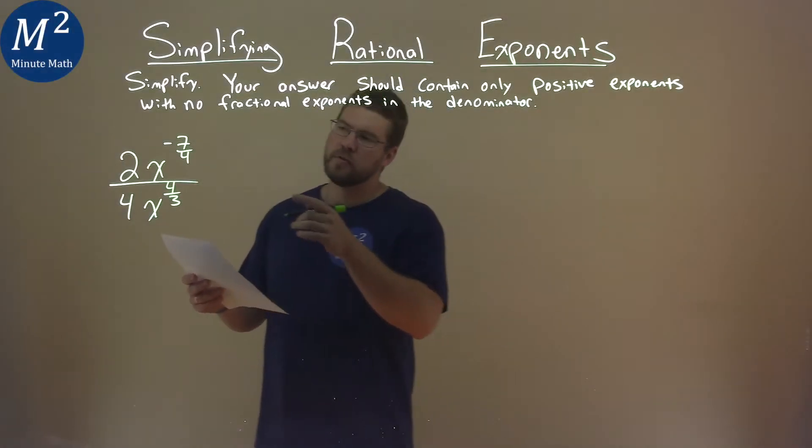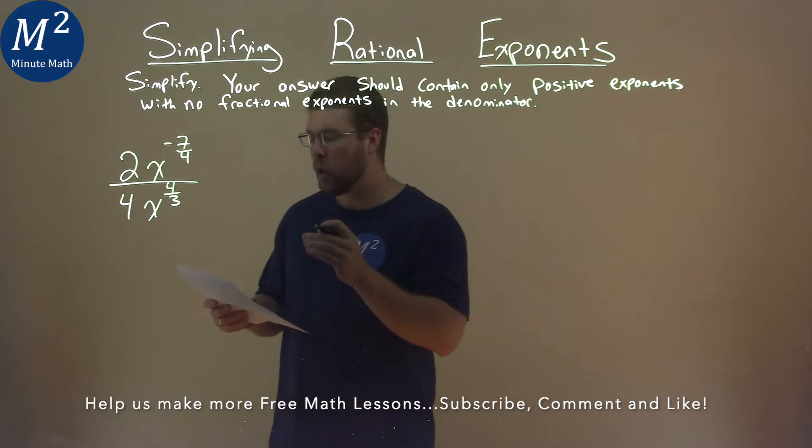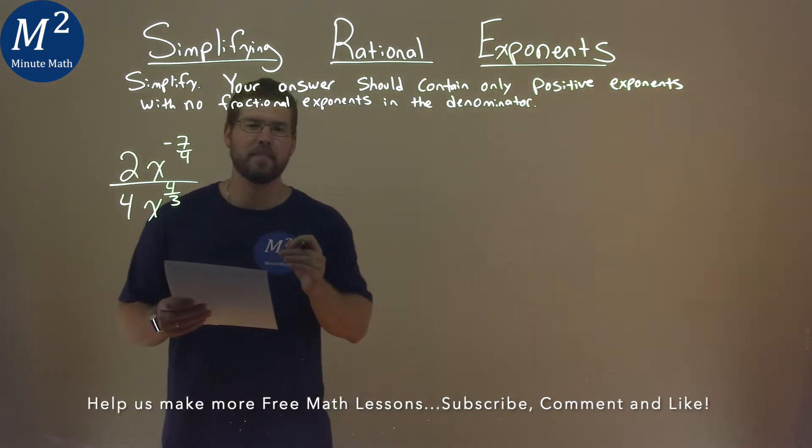We're given this problem right here: 2x to the negative 7 fourths power over 4x to the 4 thirds power, and we get to simplify.